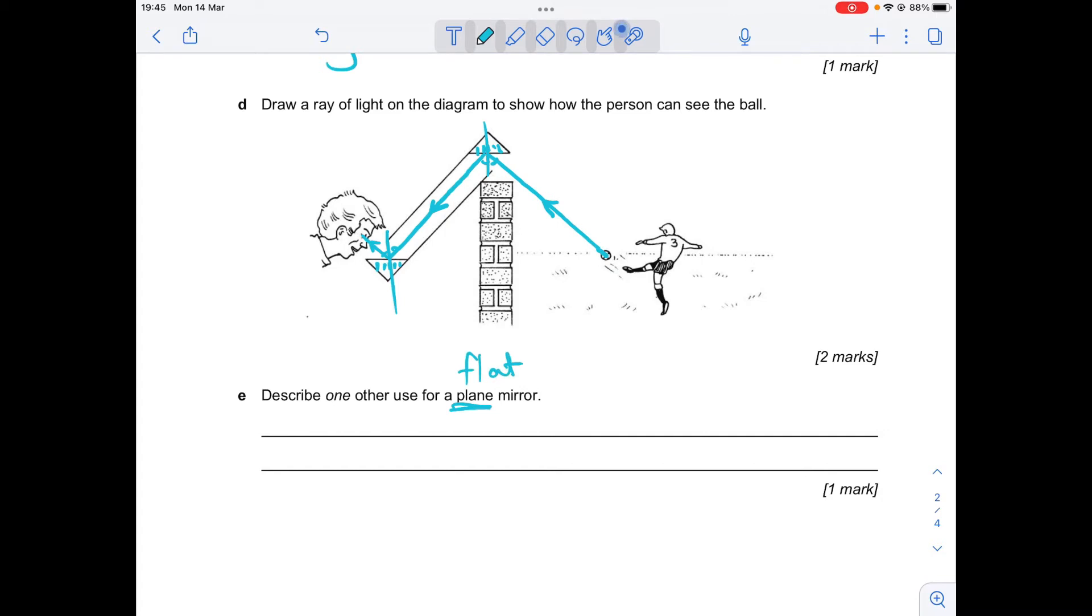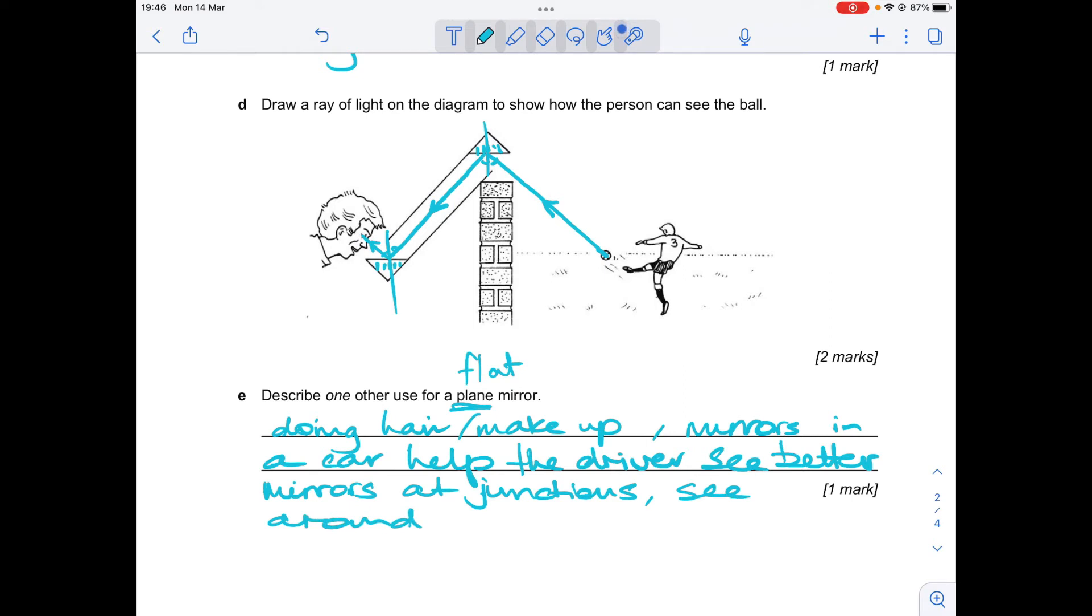So where else could we find flat mirrors? You might use it for doing your hair or your makeup. You might choose mirrors in a car to help the driver see. You could also have chosen sometimes they put mirrors at junctions, don't they, so you can see around a corner.